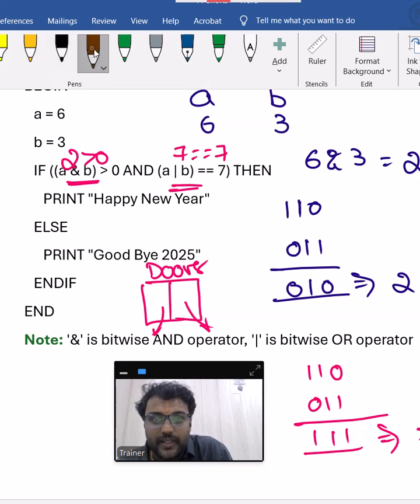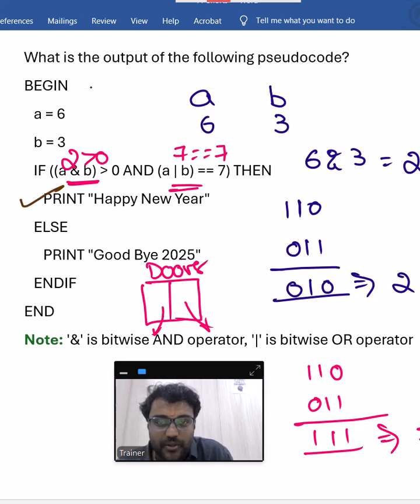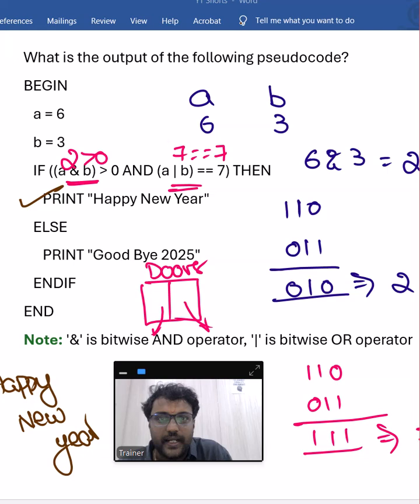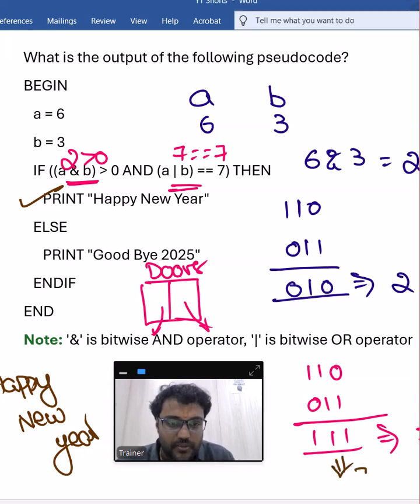Now we can enter into this loop. So we have to print happy new year. The output of this entire scenario is happy new year. Here the binary conversion to decimal is nothing but 7. Hope you understand this. Wish you happy new year.